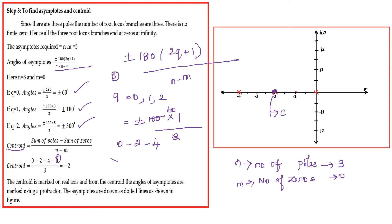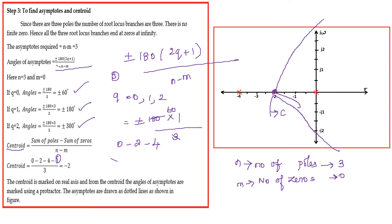From the centroid, draw the asymptotes using a protractor. The first asymptote is at ±60 degrees. Using the protractor, mark 60 degrees and -60 degrees from the centroid. Asymptotes are drawn as dotted lines as shown in the figure.